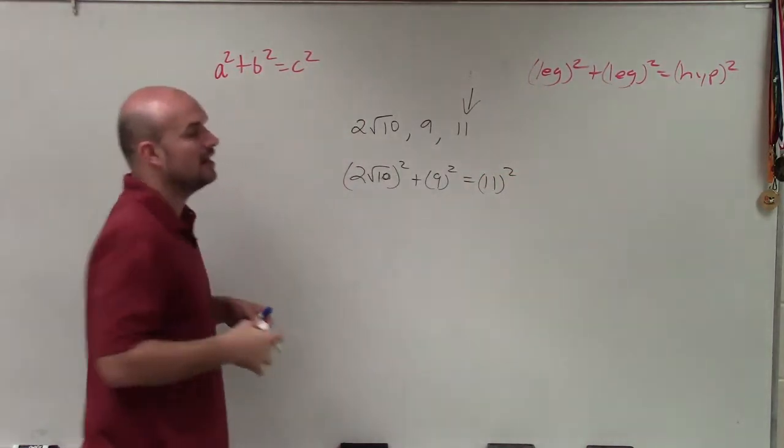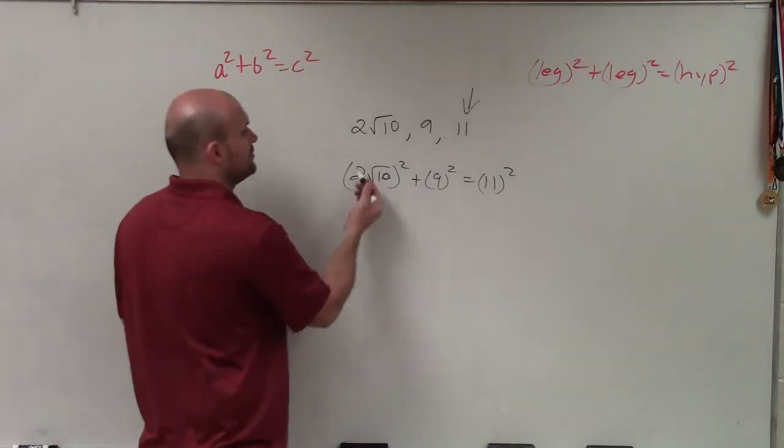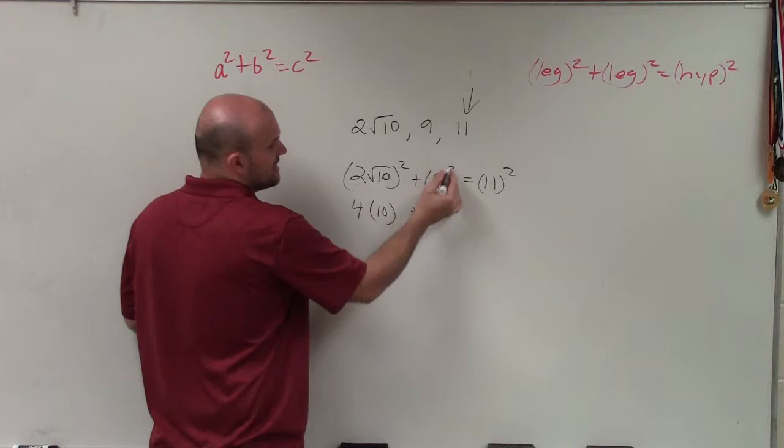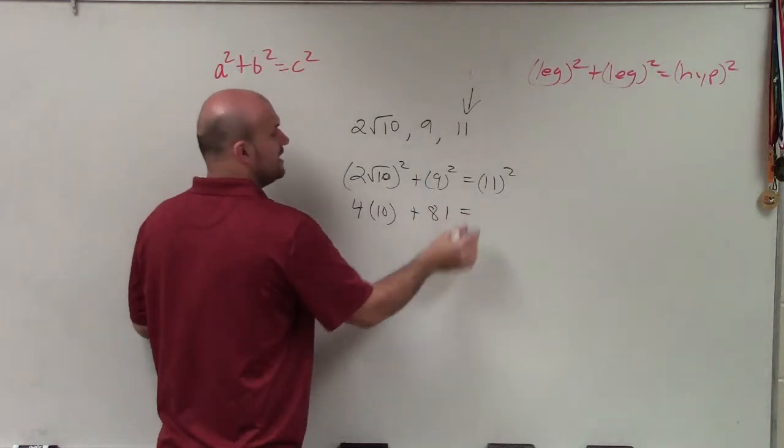So 2 square root of 10 squared, you can square both these terms. That's going to be 4 times 10, plus 9 squared is 81, equals 11 squared...